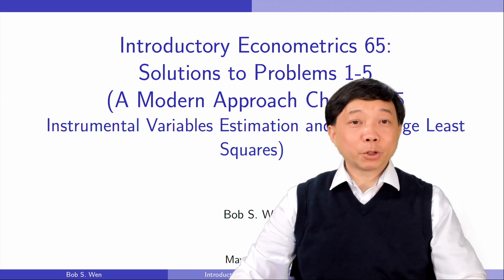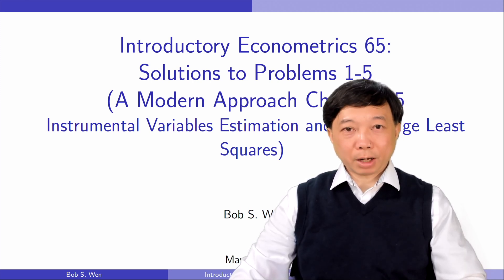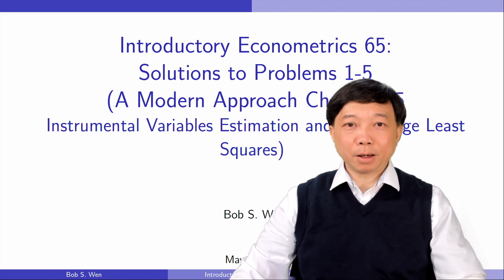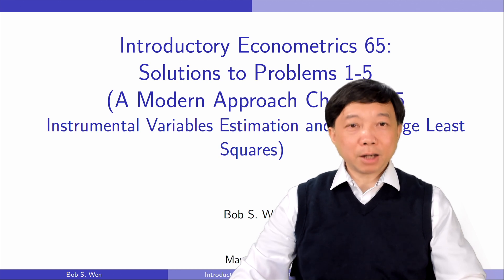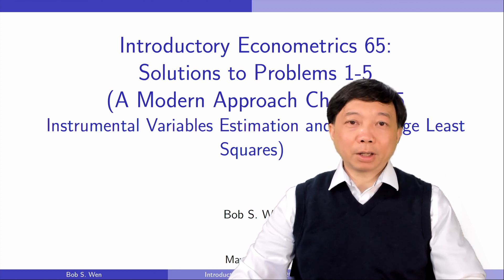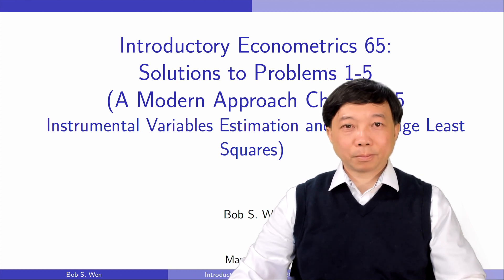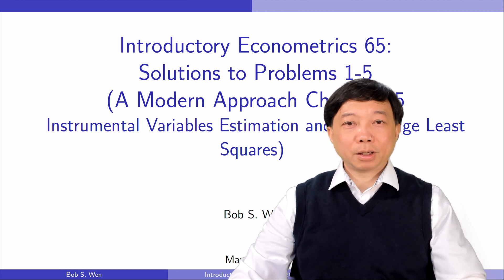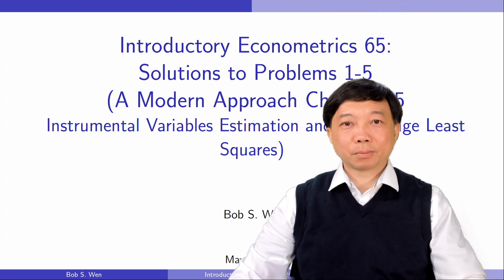Hi, I'm Bob. Thank you so much for learning introductory econometrics with me in the past few months, and for all the feedback and comments of encouragement. I will continue to post the solutions to the rest of the chapters in A Modern Approach, the seventh edition. Now we are at Chapter 15, Instrumental Variables Estimation and Two-Stage Least Squares. We will do problems 1 to 5 today.